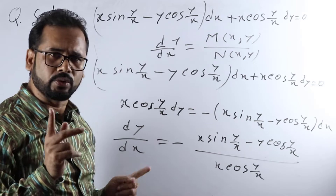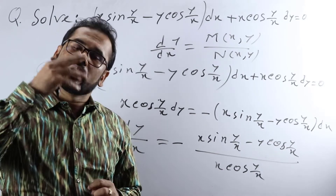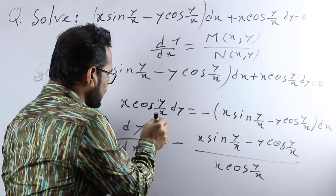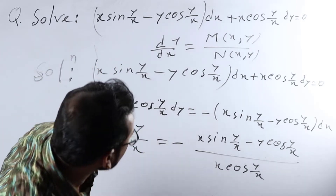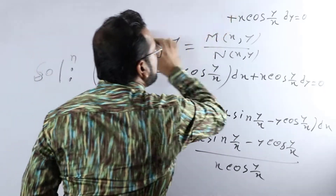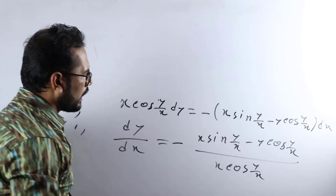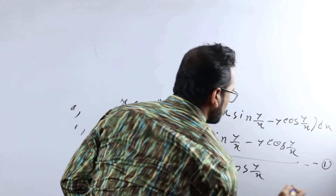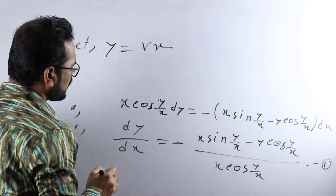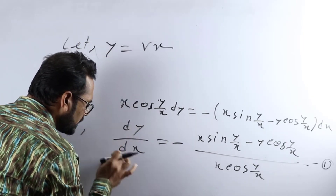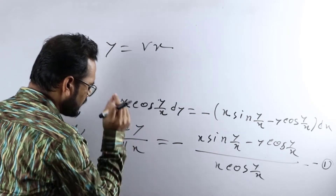To solve this homogeneous differential equation, we let the dependent variable equal another arbitrary variable times the independent variable. Here the independent variable is x, so we let y equals vx. This is equation number 1.